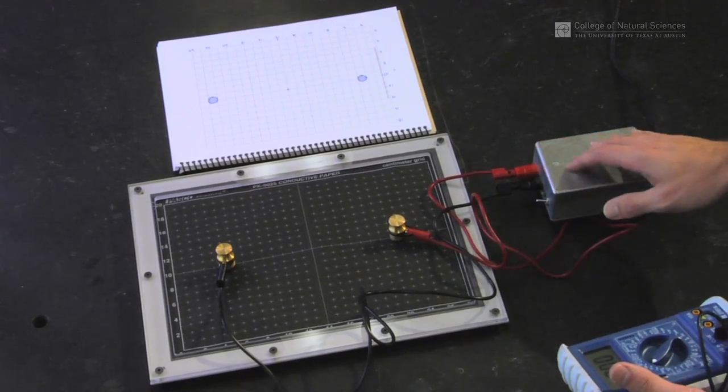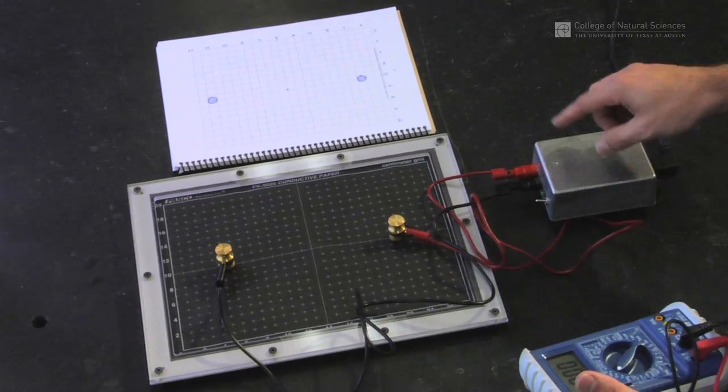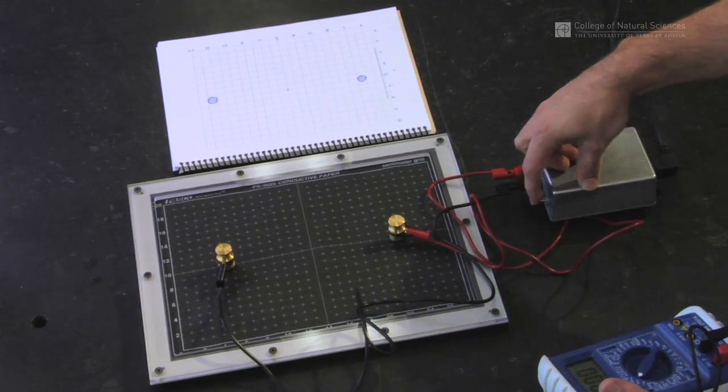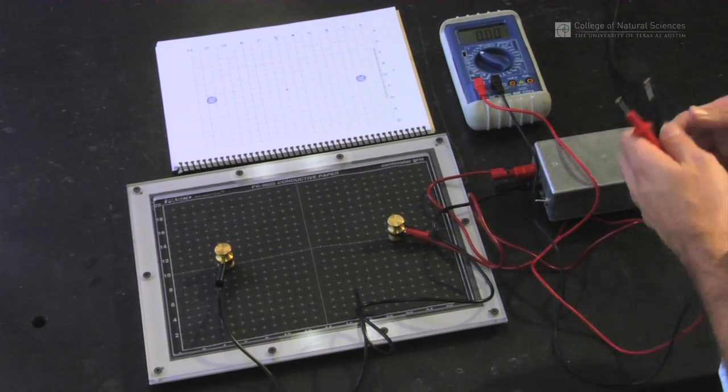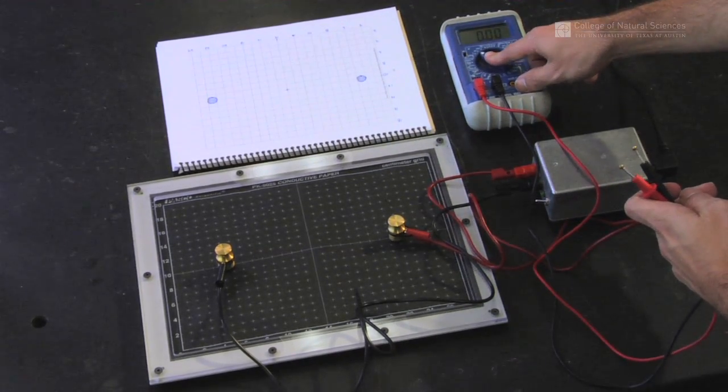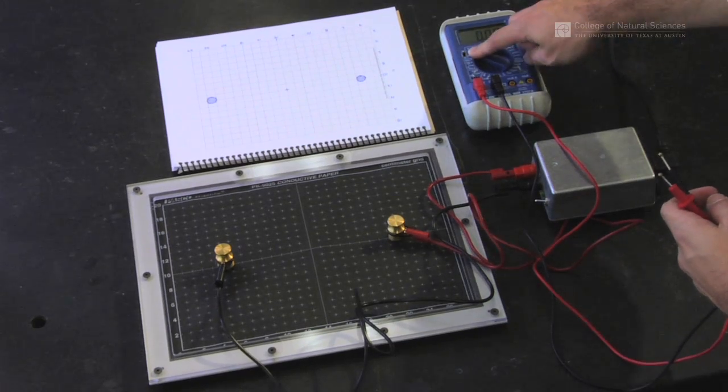After we have our circuit set up, our conductive paper has the power supply attached to it. The power supply is on. Our multimeter is set up in the 20 volt or less voltage range, DC.